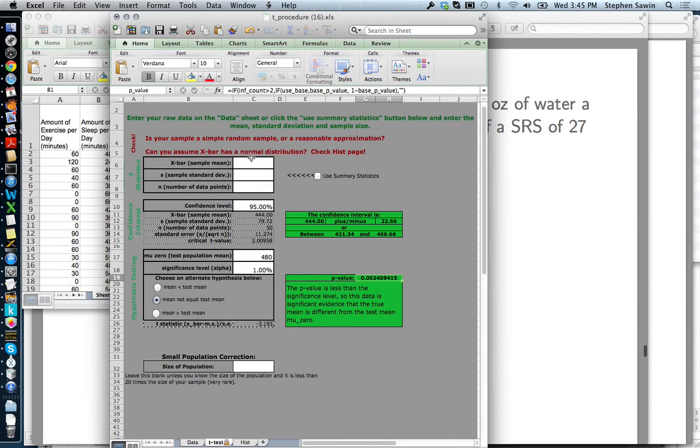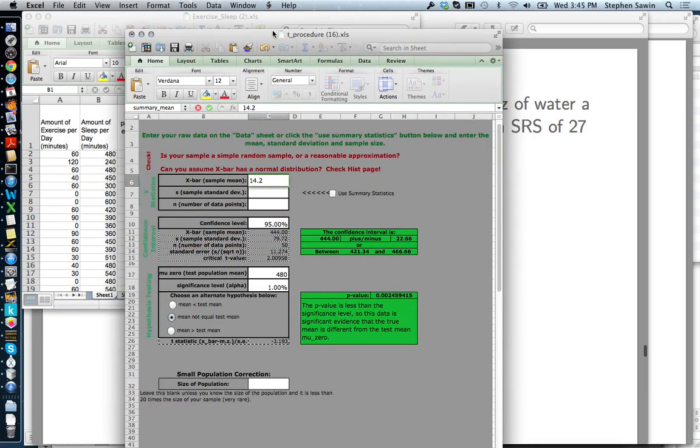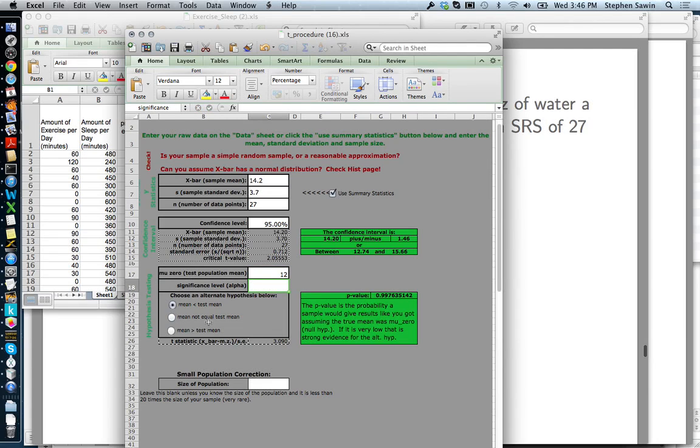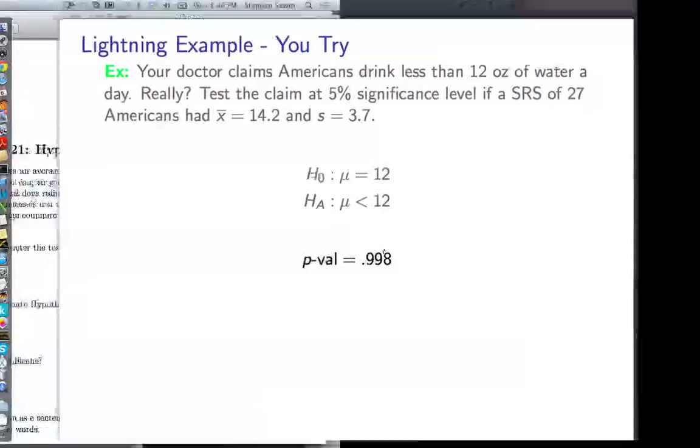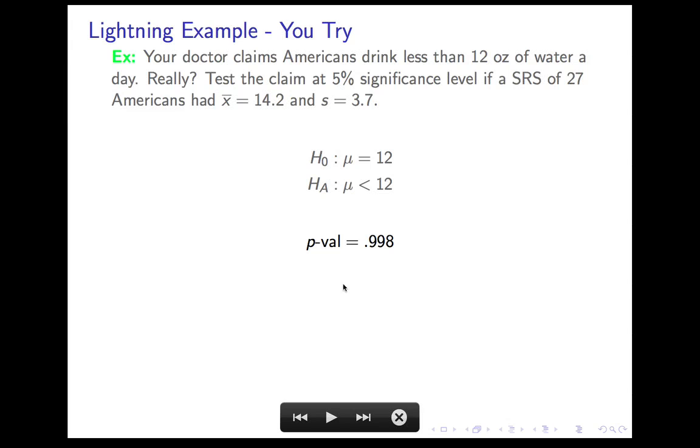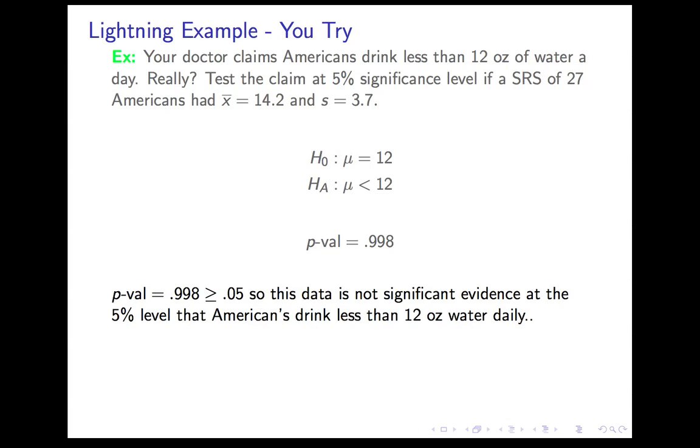x̄ is 14.2, s is 3.7, n is 27. And as I said, I should get a new copy, but I'm not going to. And we're testing against the claim that it is 12. And we're looking for evidence that μ is less than the test mean of 12, and we get a p-value 0.997, or rounding up, 0.998.